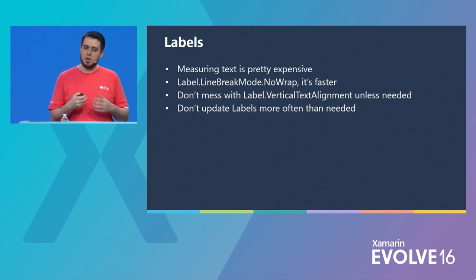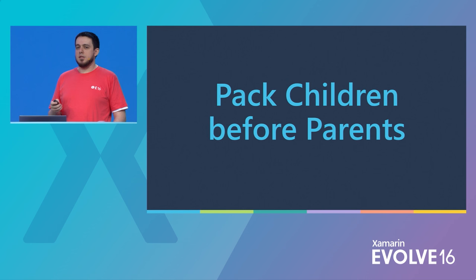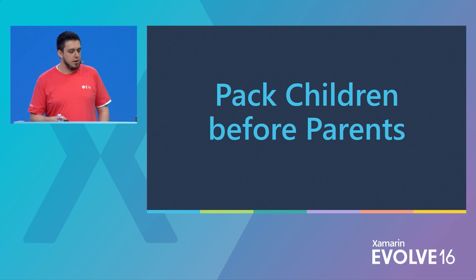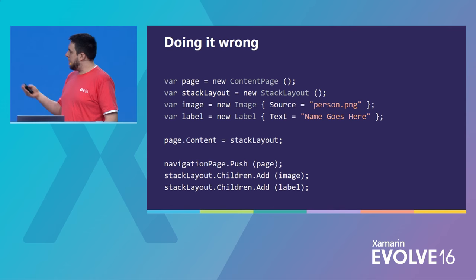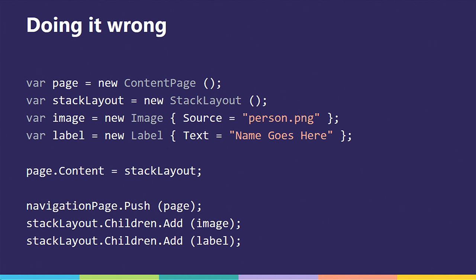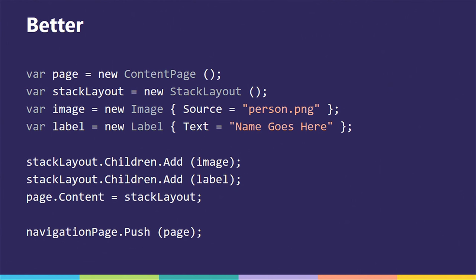A big mistake I see a lot is not packing children of a view before you pack their parents into the visual hierarchy. If you pack a stack layout into the content of the page before adding its children, the moment you add that stack layout to the visual hierarchy it's being realized, measured, and rendered — then you add stuff to it, which invalidates the measurements and rendering, and it all happens over again. If you simply change the order so it all happens before it gets visualized, you don't pay those extra performance costs. I literally cut a second off a guy's screen transition time just by doing this.